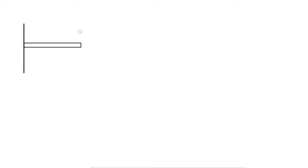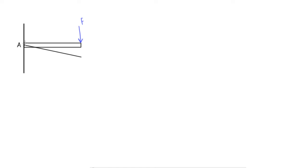Now it's time to start talking about moments. If we have a force here pushing down on this beam that's built into a wall — let's say this is force F — this is actually going to want to cause this beam to rotate down like this. If you've ever put something on the end of a bookshelf, you know it's going to want to try and bend it down. So what's happening here is it's trying to rotate about this point A, where it's connected to the wall.